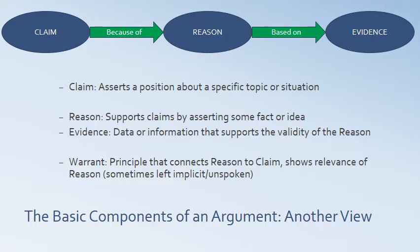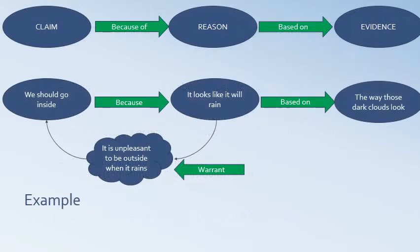The warrant is sometimes left implicit or unspoken. Here's another simple example we've seen before. The claim: we should go inside. The reason to support that: it looks like it will rain. The evidence that it looks like it's going to rain: dark clouds. So we have our claim, our reason, and our evidence. The warrant — the implied idea connecting the reason to the claim — could be something as simple as: it is unpleasant to be outside when it rains. That's the logic that connects your reason to the claim.